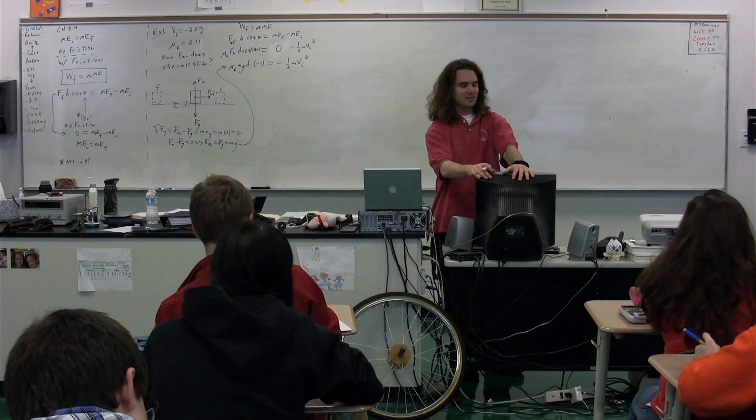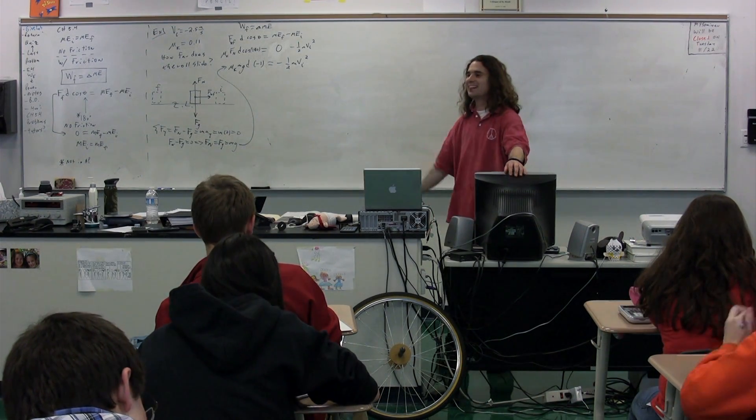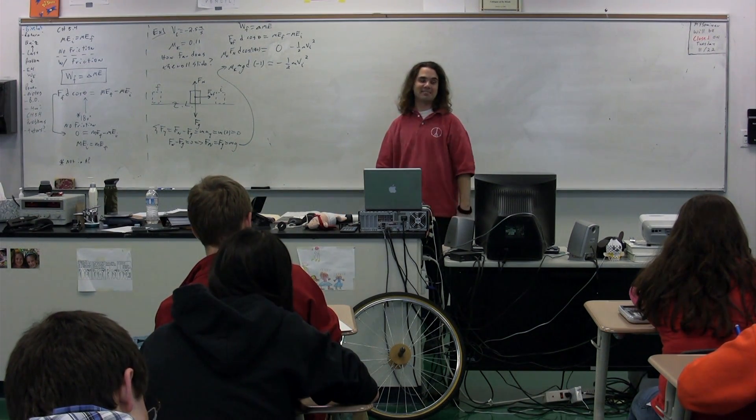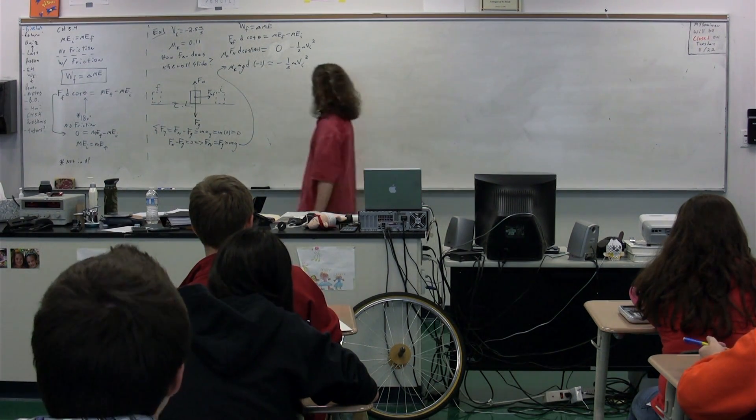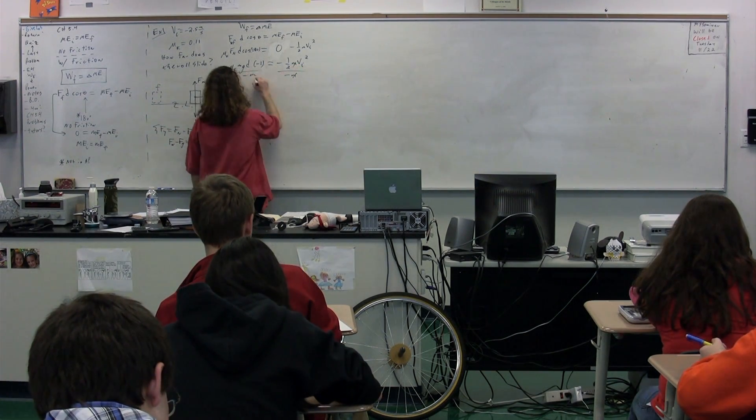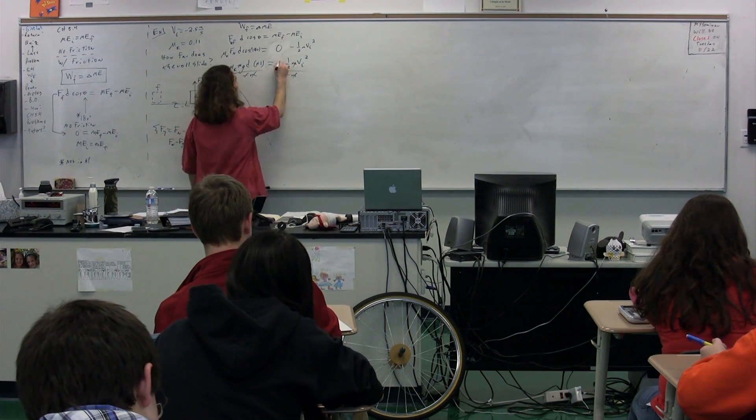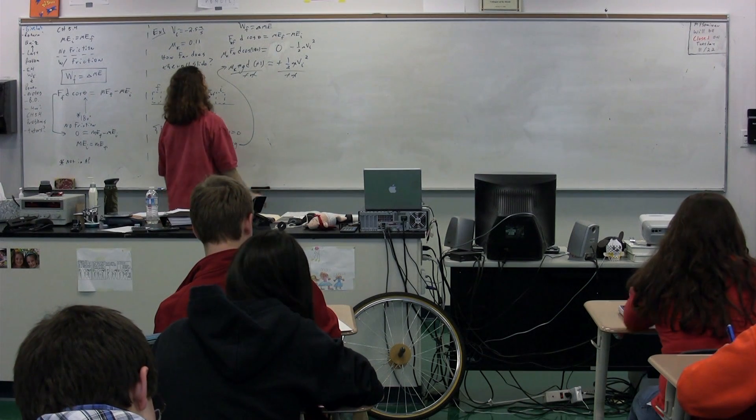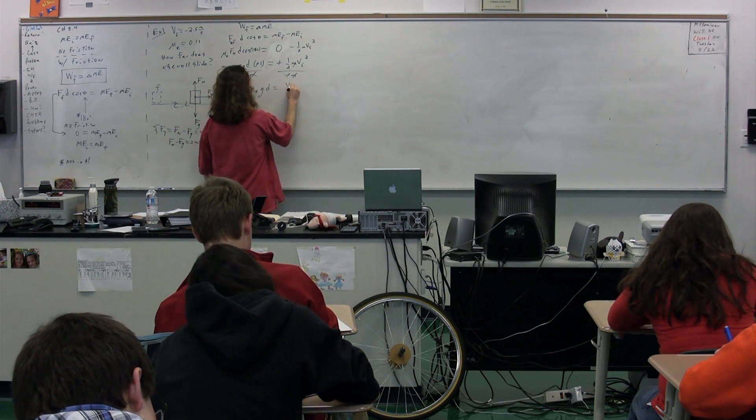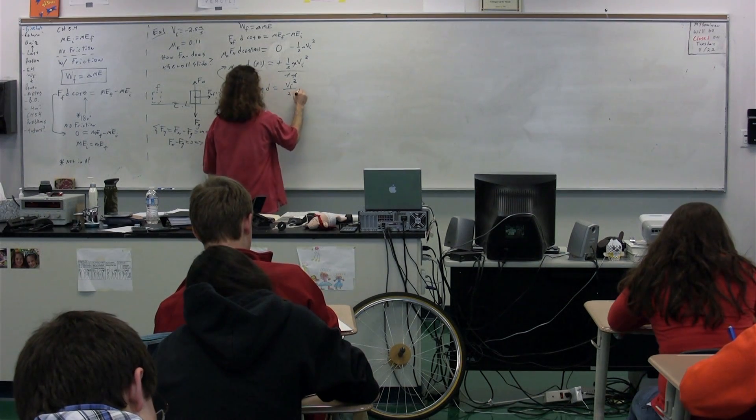Matt. Everyone divide both sides by mass. Even better! Everyone divide both sides by negative mass. We can take negative mass from everyone and still be equitable. We have mu_k times g times d equals velocity initial squared divided by 2.